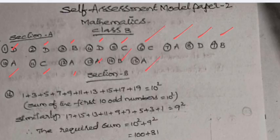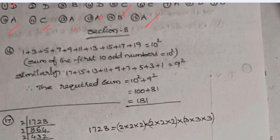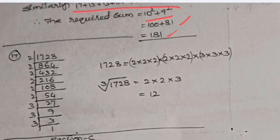Section B, Question 16 solution: Add 1 to 19 — these are the first 10 odd numbers, whose sum is 10 squared. From 1 to 17, these are the first 9 odd numbers, whose sum is 9 squared. So the total sum is 10 squared plus 9 squared, which is 100 plus 81, equaling 181.